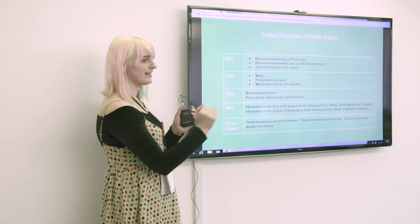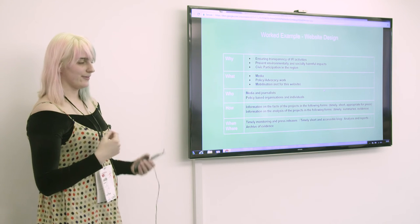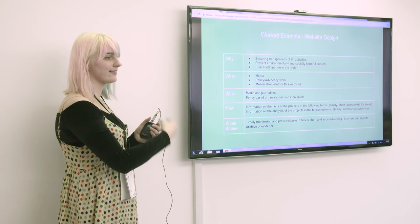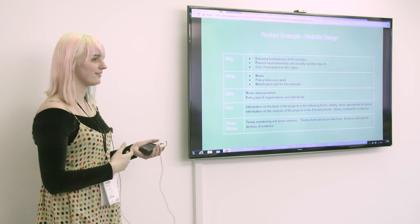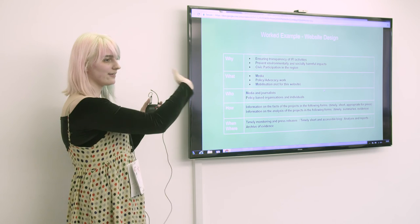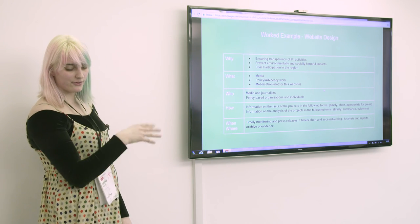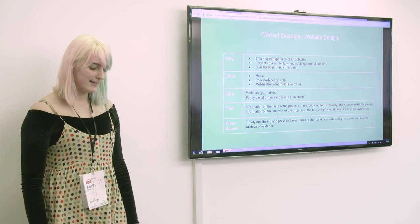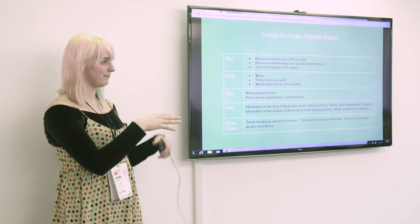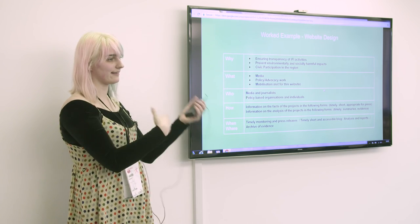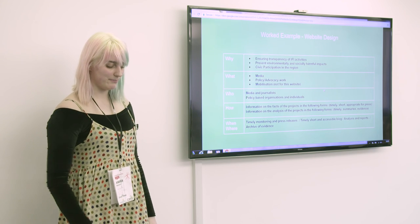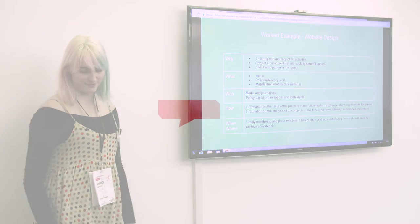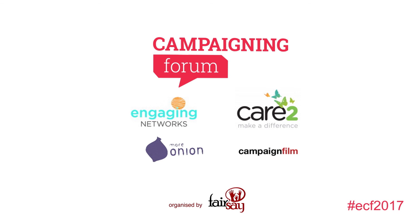How are they going to do this? They're going to present facts and analysis that people can take and understand — not just providing experts with facts, but also providing people who aren't already experts or journalists with analysis. They're going to do that through short and engaging pieces appropriate for the press. They're going to provide analysis that's timely, with summaries available and evidence they can find. Breaking it down into the when and where: it's through timely monitoring and press releases, in a place that can be seen as active and updated regularly — which impacts what the website looks like or whether they should use a tool like Twitter for ongoing updates. They need short, accessible content, a space for analysis and reports, and an archive of evidence — working out why they need that evidence, which is because policy-based organisations use their analysis and need to know it's based on fact.